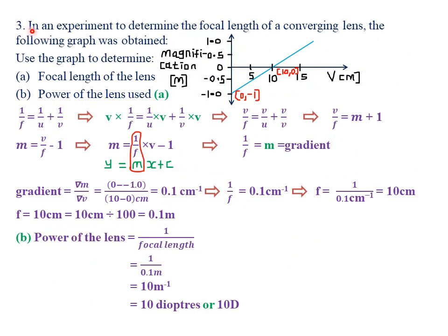Our third example: in an experiment to determine the focal length of a converging lens, the following graph was obtained. Use the graph to determine the focal length of the lens used. From our previous class, we looked at the graphical analysis of magnification M against image distance V. From the lens formula 1/F = 1/U + 1/V, we multiply each term by V to introduce magnification.